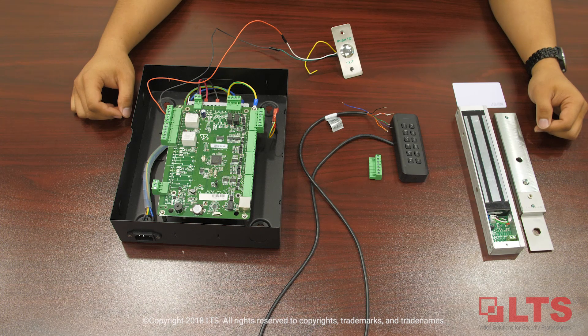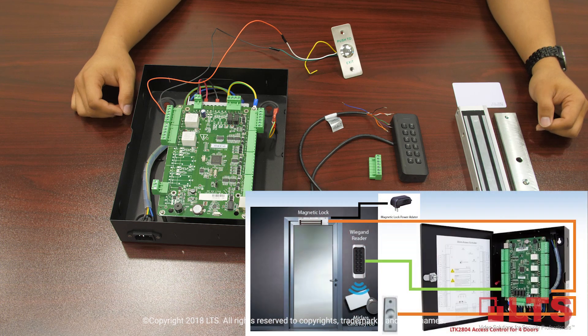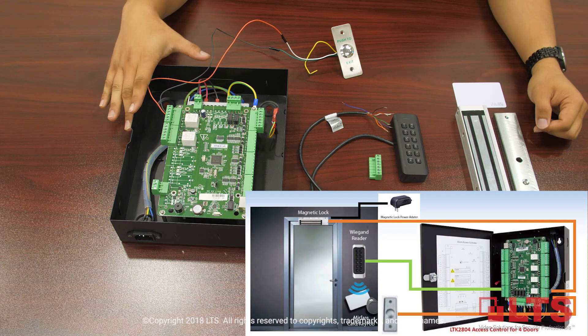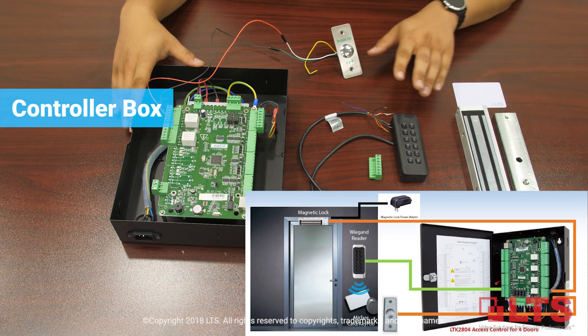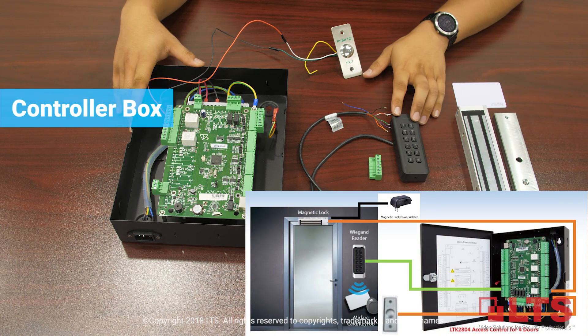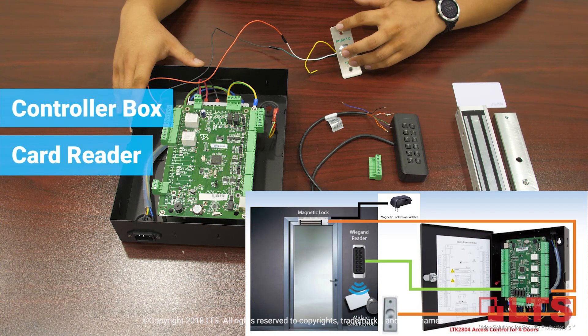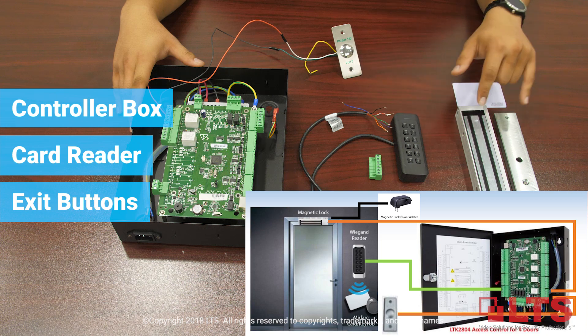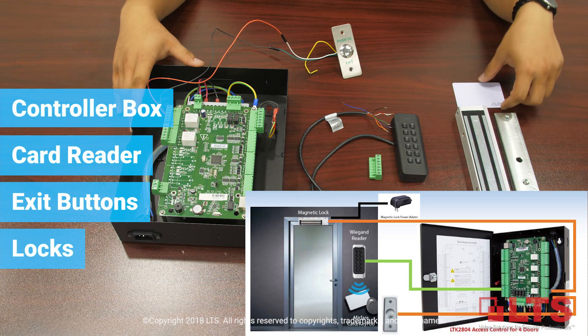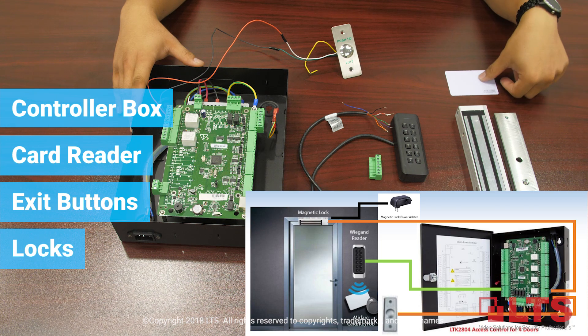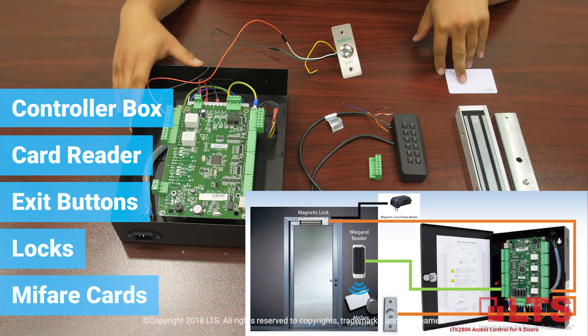Access control is composed of four parts: controller box, card reader, buttons, and locks — and of course the actual cards themselves.